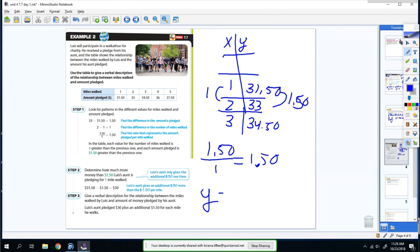So my equation would be y = 1.5x plus my starting point. The only way I can find my starting point is when x is 0. I know when x is 1, but I need to figure out when x is 0. So I'm down 1. If I go up 1, I add $1.50.